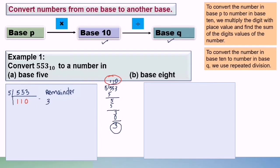We divide again: 110 divided by 5. We obtain 22, remainder 0. Then 22 divided by 5 gives 4, remainder 2. Next, 4 divided by 5 — not enough, so we put 0, and the remainder is 4.